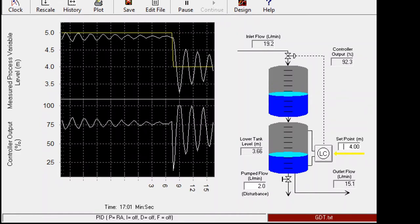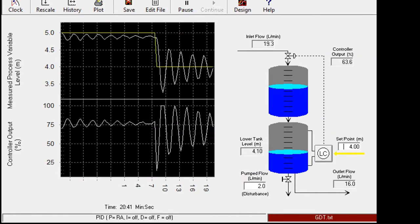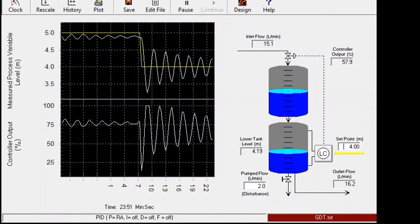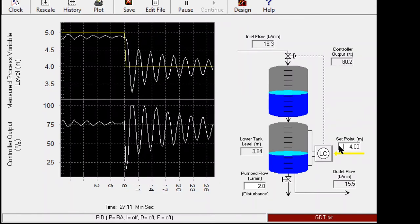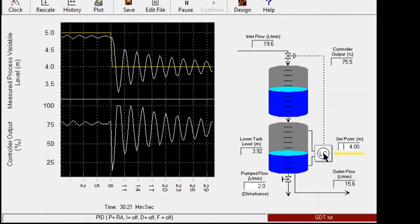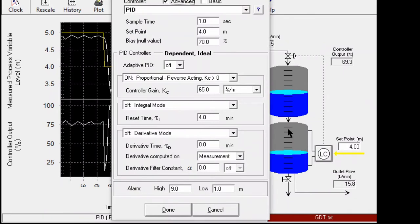We still see oscillation, however the oscillation is dying down, meaning that we haven't reached the ultimate gain yet. Let's try some value even higher, 70.